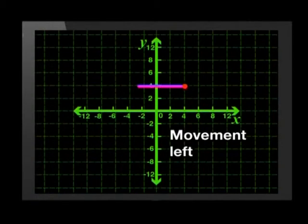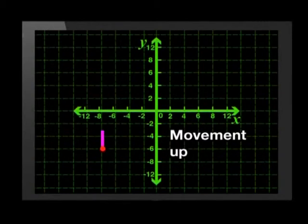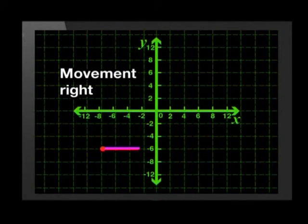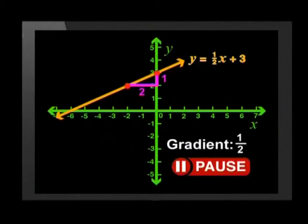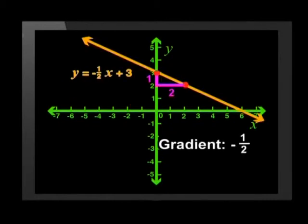And a movement to the left on the x-axis will also be negative. A movement up the y-axis is positive and a movement to the right on the x-axis is positive. Now have a look at these graphs again and see if you notice anything about the gradients.